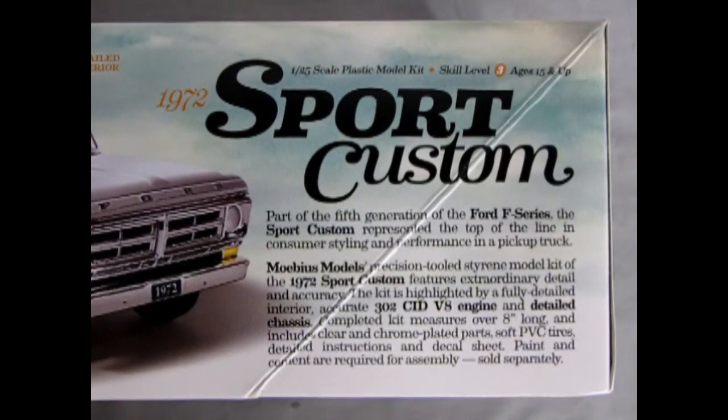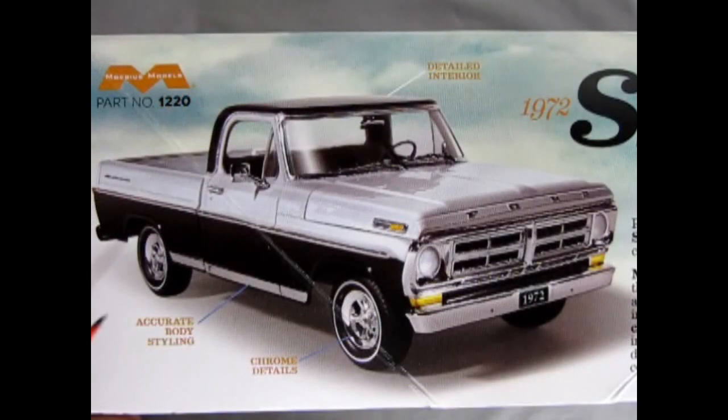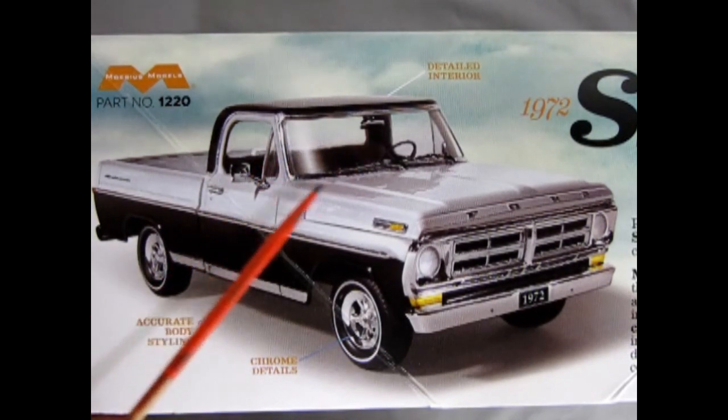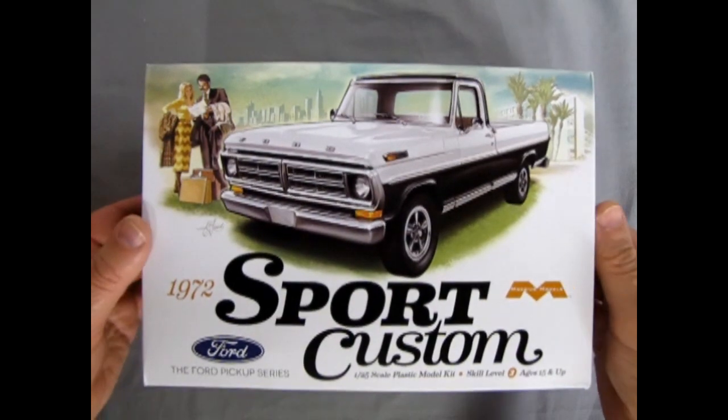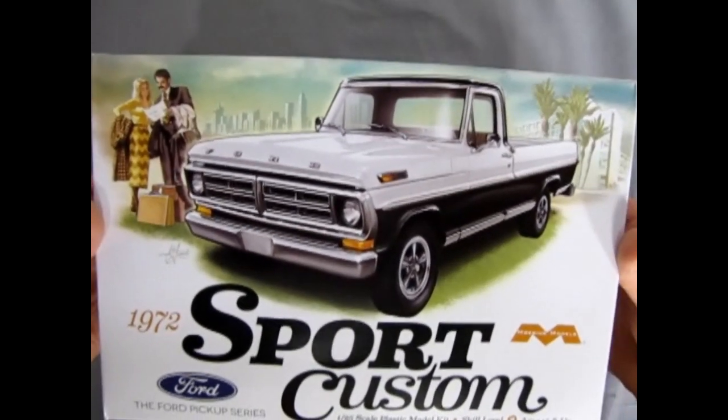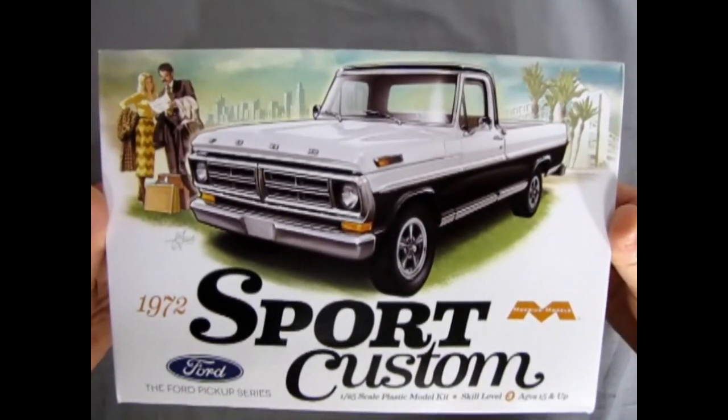Completed kit measures over 8 inches long and includes clear and chrome plated parts, soft PVC tires, detailed instructions, and decal sheet. Paint and cement are required for assembly, sold separately. Here's our accurate body styling, chrome details, and a detailed interior. Now let's take the lid off our 1972 Ford Sport Custom by Mobius Models and see what's under the lid.